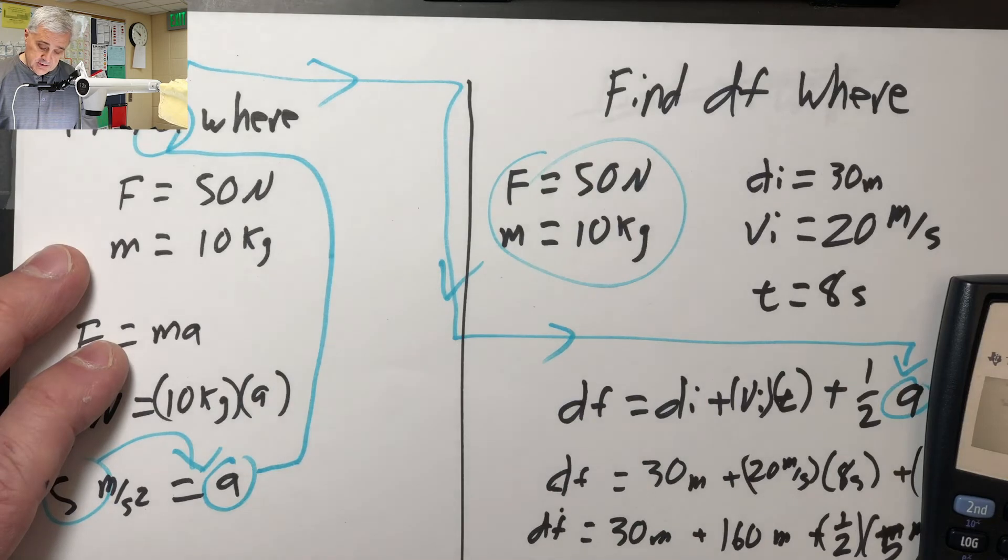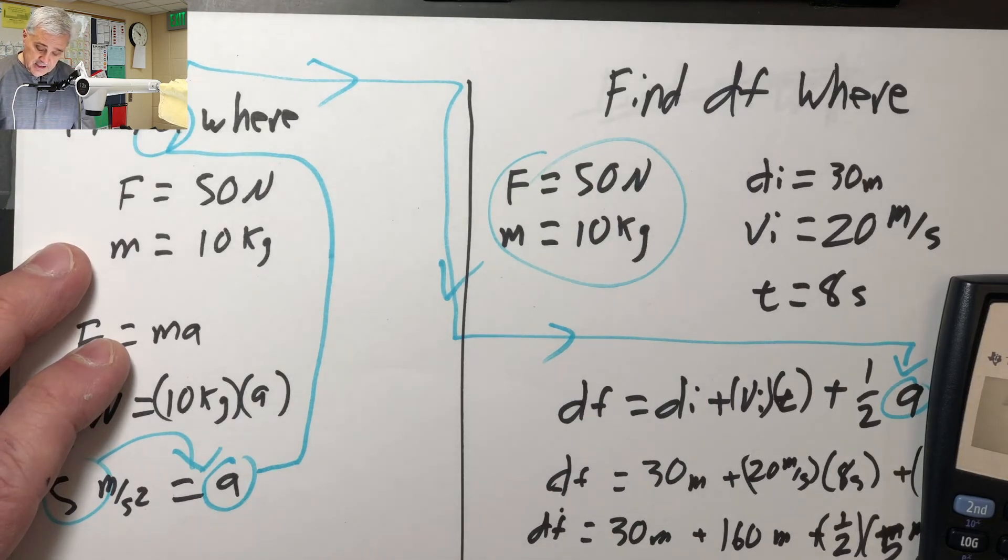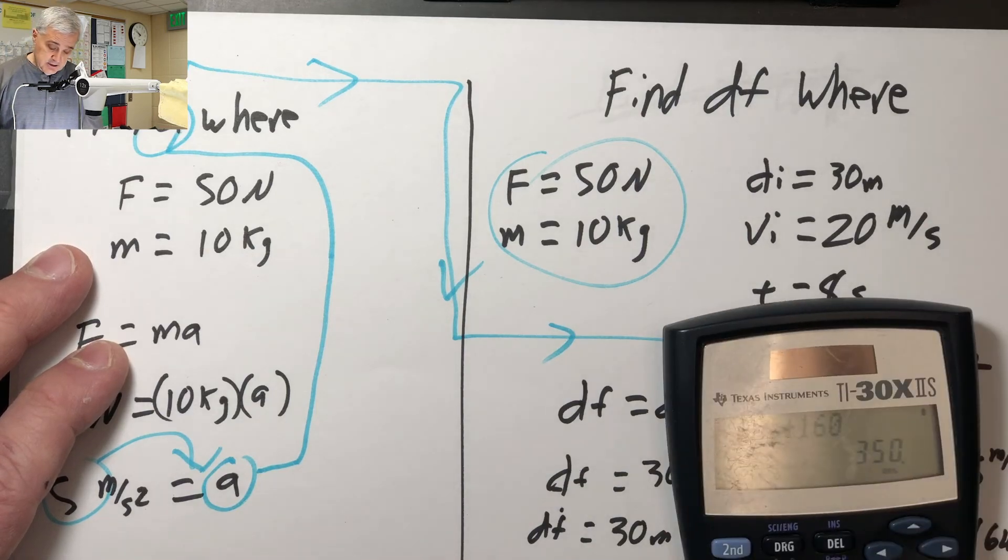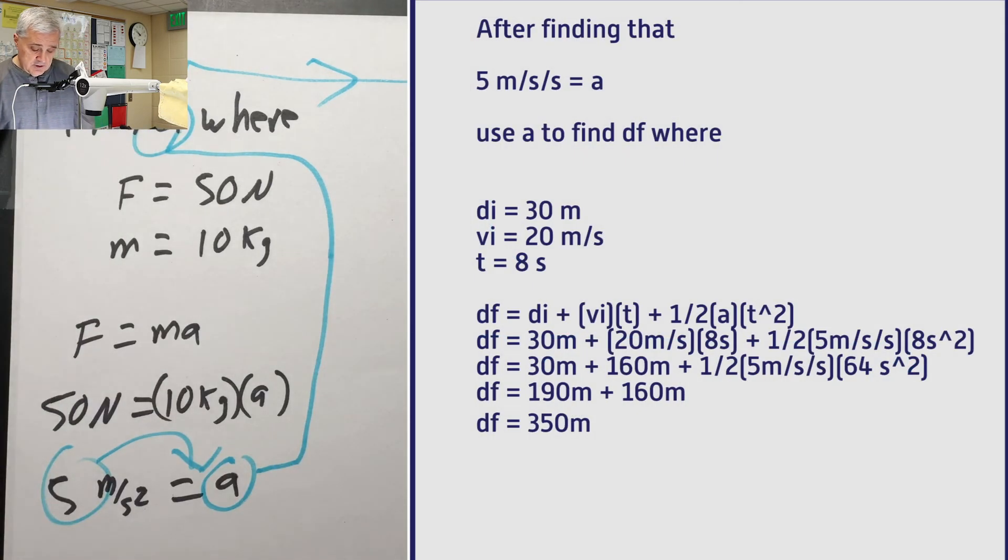I can do it on the calculator. Plus 190, if I actually hit the plus button. And there it is, 350. 350 meters is d sub f. Find d sub f where all that stuff is true. Answer is not bad.